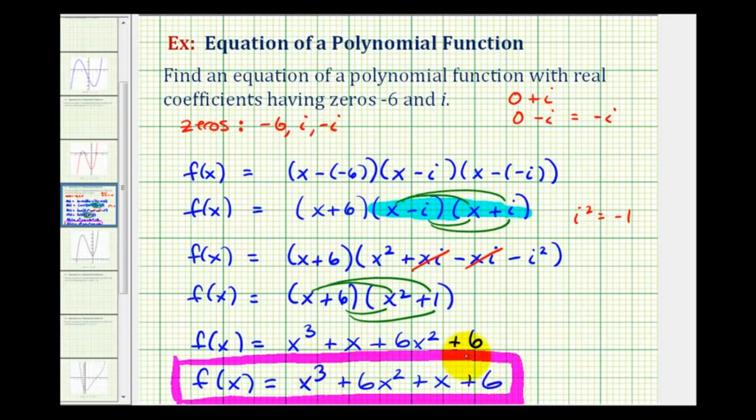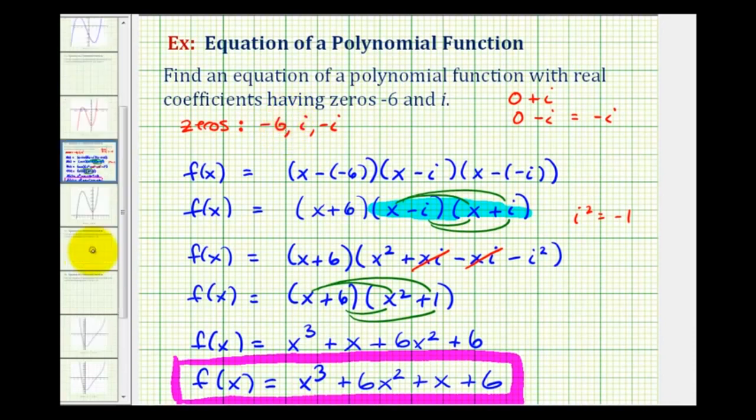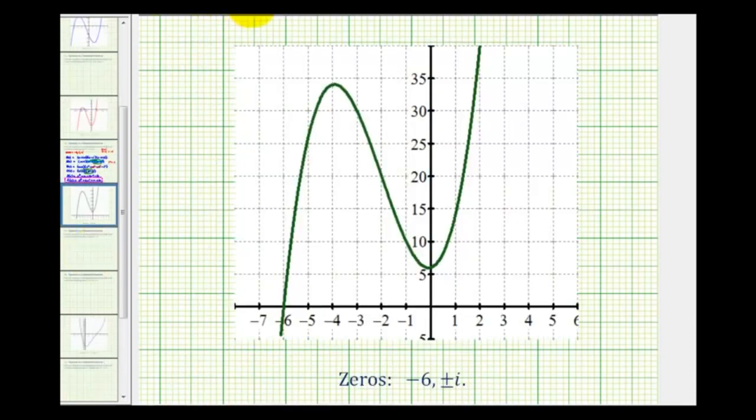One thing we can do to verify this is to graph it. Remember, if the zeros are real, they would be the x intercepts of the graph. So if we graph this, even though we have three zeros, we should only have one x intercept, x equals negative six. So here's the graph of our function. Notice how we do have an x intercept of negative six. And even though we have two other zeros, because they're imaginary, we do not have any other x intercepts.